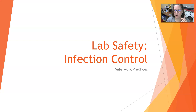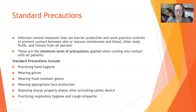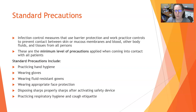Hi everybody, it's Dr. A with our sixth and last video on lab safety. We're going to talk about safe work practices in infection control. So what are the standard precautions? They are infection control measures that use barrier protection and work practice controls to prevent contact between the skin or mucous membranes and blood and other body fluids and tissues from all persons.